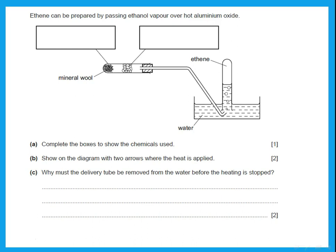Ethanol is originally a liquid; to get it into vapor, you heat it. To hold liquid in a horizontal test tube, it is soaked in mineral wool. The ethanol vapor is then passed over hot aluminum oxide — so aluminum oxide goes in the middle of the test tube. Draw two arrows pointing upward under the places where heat is applied: under the ethanol and under the aluminum oxide.